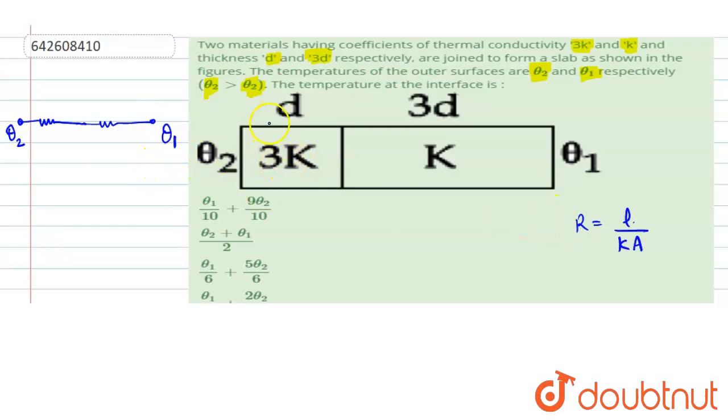The first resistance is L upon Ka. What is the length? Its length is d. So that resistance is d upon 3k into A.